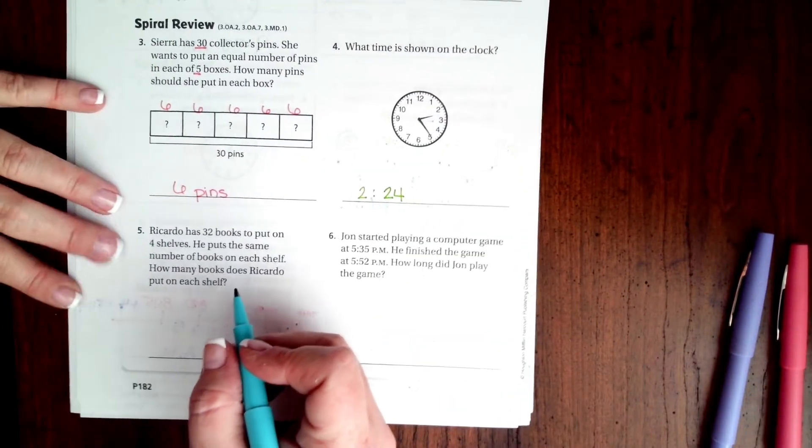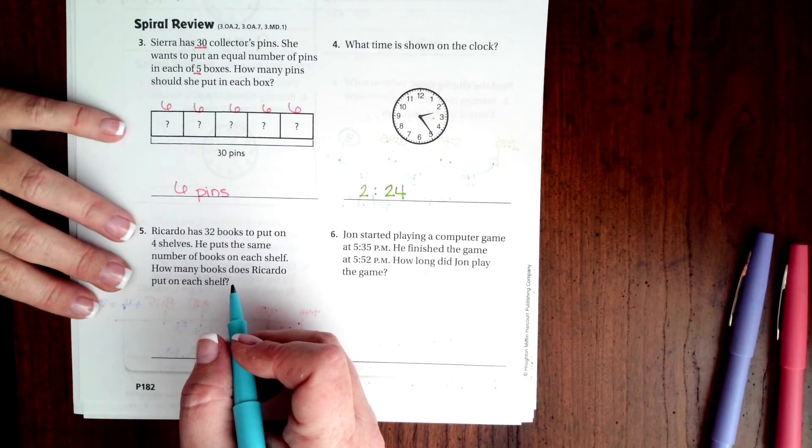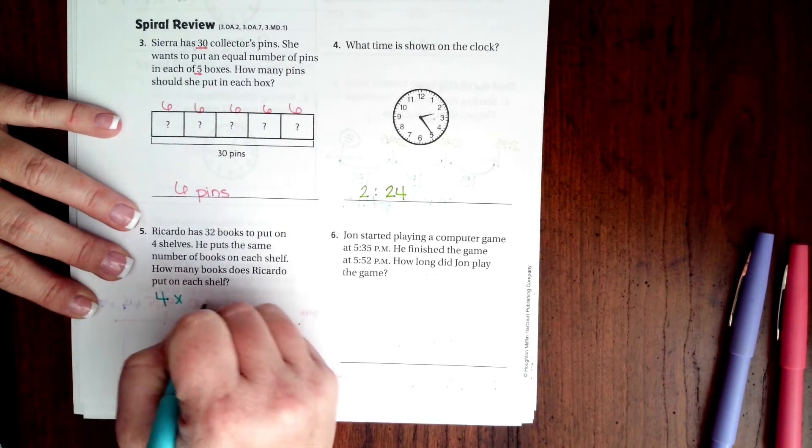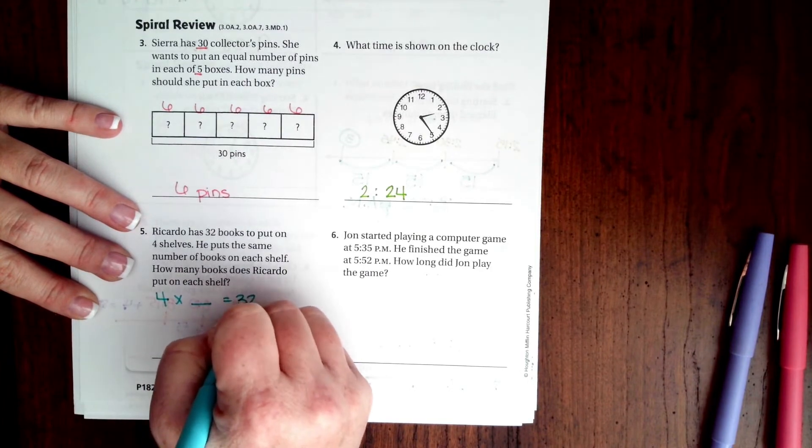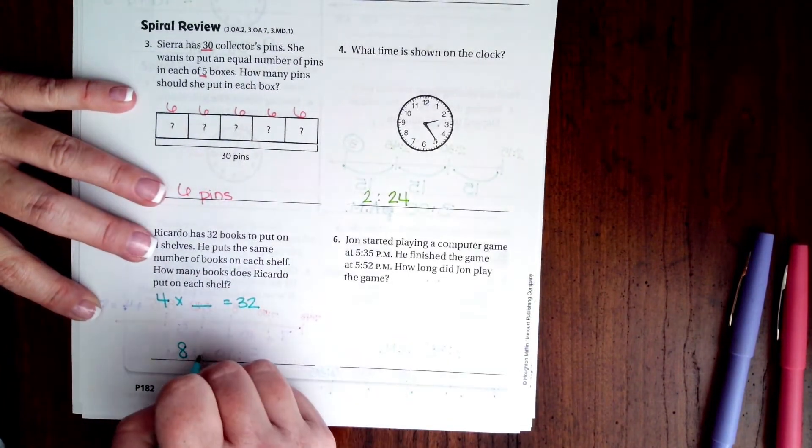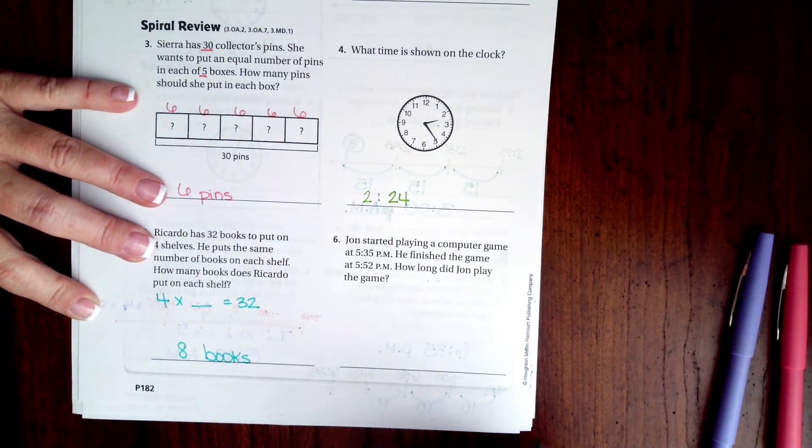Ricardo has 32 books to put on four shelves. He puts the same number of books on each shelf. How many books does Ricardo put on each shelf? So, four times blank is 32. Well, I know that four times eight is 32. So, eight books.